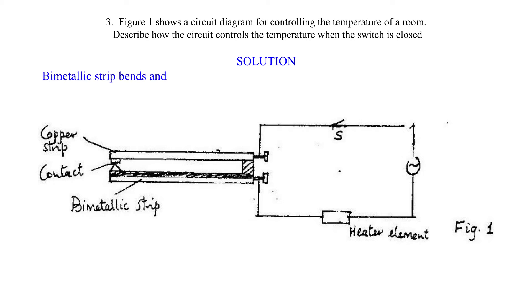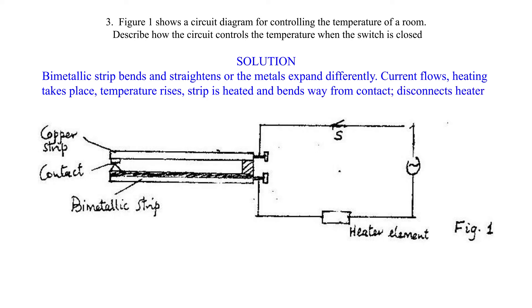Solution. Bimetallic strip bends and straightens or the metals expand differently. Current flows, heating takes place, temperature rises. Strip is heated and bends away from contact, disconnects heater. Temperature drops, reconnects heater or completes circuit.